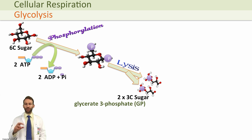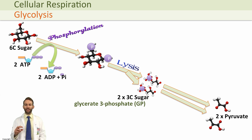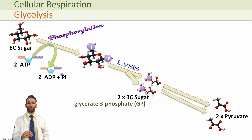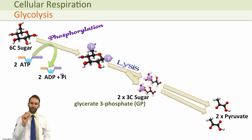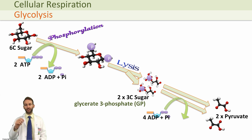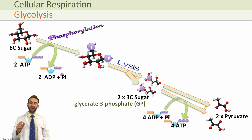The next stage is to convert these further into molecules called pyruvate, so we turn them into two pyruvates. When you do that, two important things happen. First, for each glycerate-3-phosphate converting into a pyruvate, we make two ATPs, so in total we're going to get four ATPs at this point.